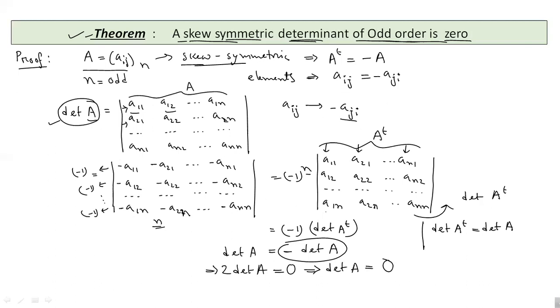So, we can say that if we have a skew symmetric matrix of odd order, then the determinant of that matrix will be 0. So, this is our proof. Thank you.